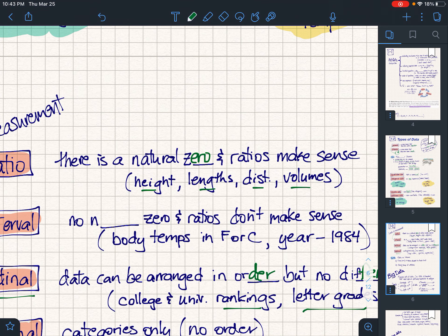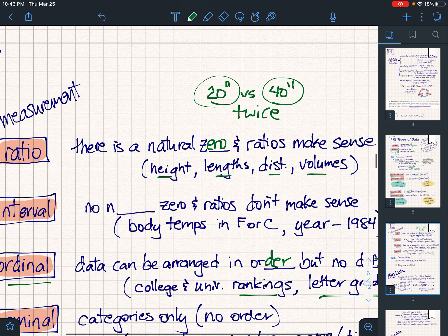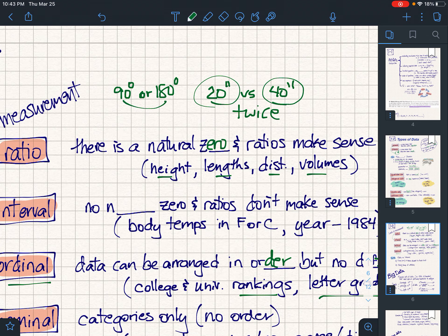And you can further make ratios. So for example, if you were to say something is 20 inches long versus something that is 40 inches long, you could say this one is twice the 20. So ratios make sense. Now when you come to temperatures, if you were to say something is 90 degrees or 180 degrees, the next one is not twice as hot.